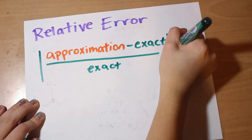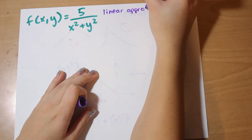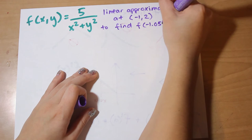Alright, so here's an example. Say you're given a function respective to x and y, that's a fraction, 5 over (x squared plus y squared). And we're going to use the linear approximation at the point (-1, 2) to find the function value at (-1.05, 2.1).